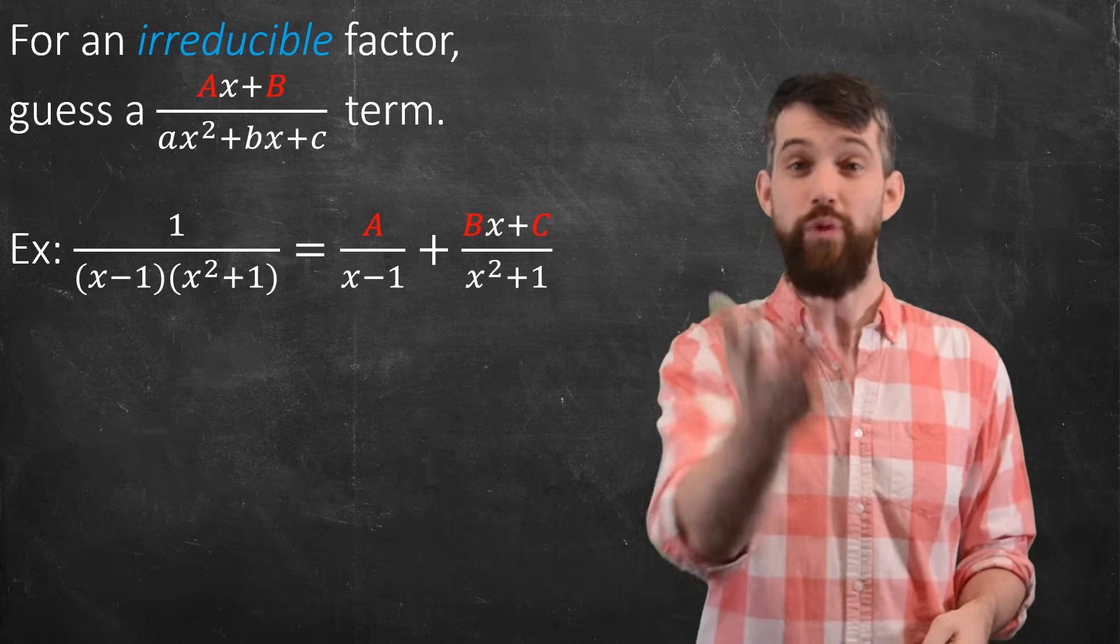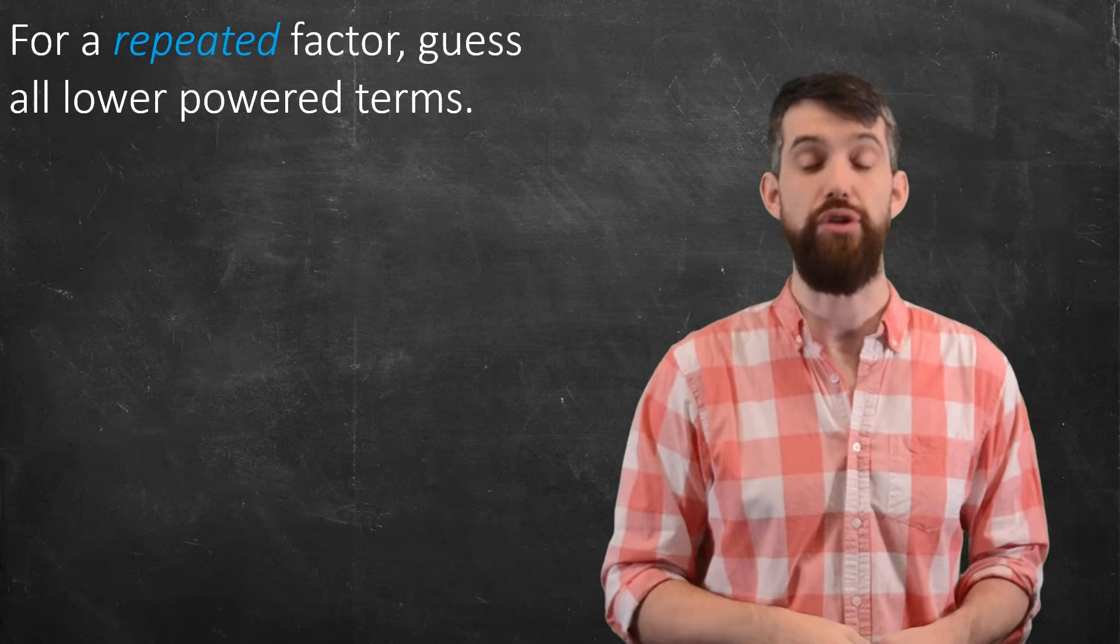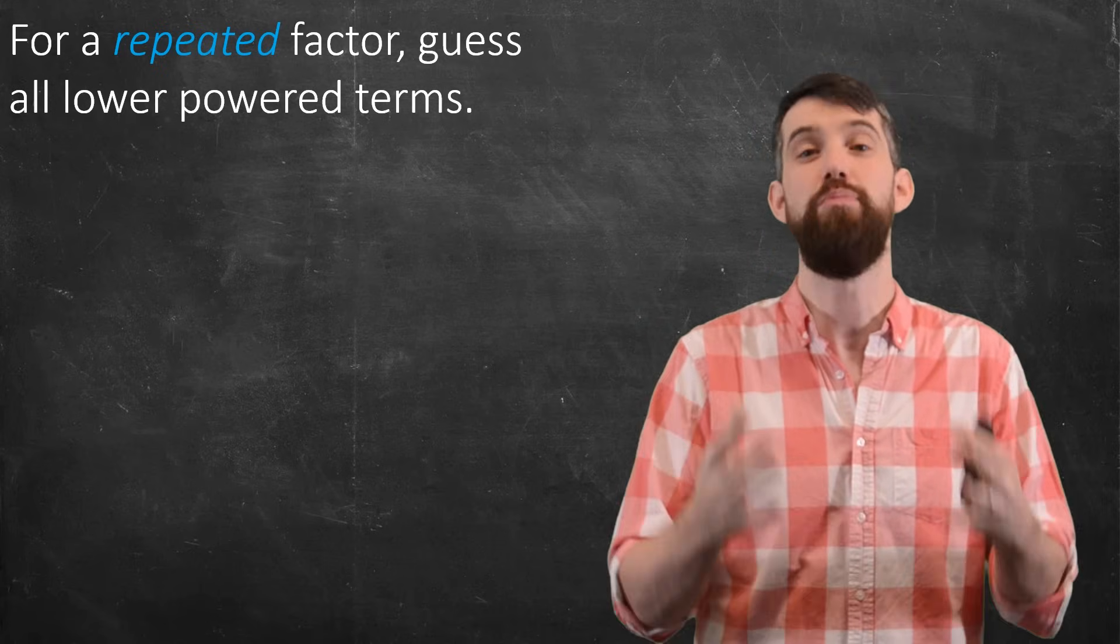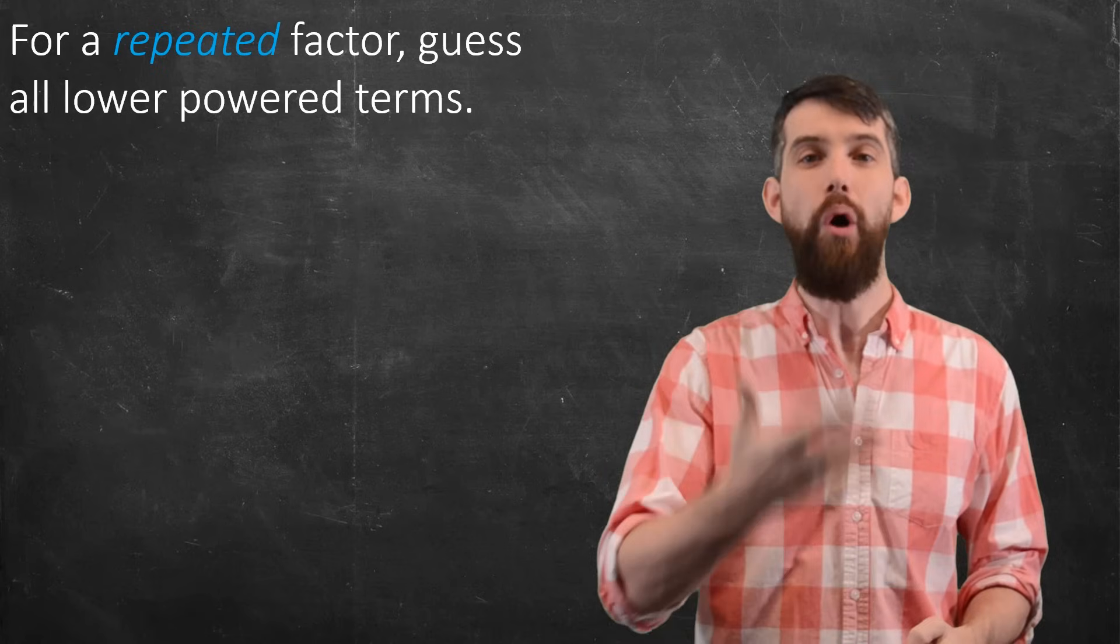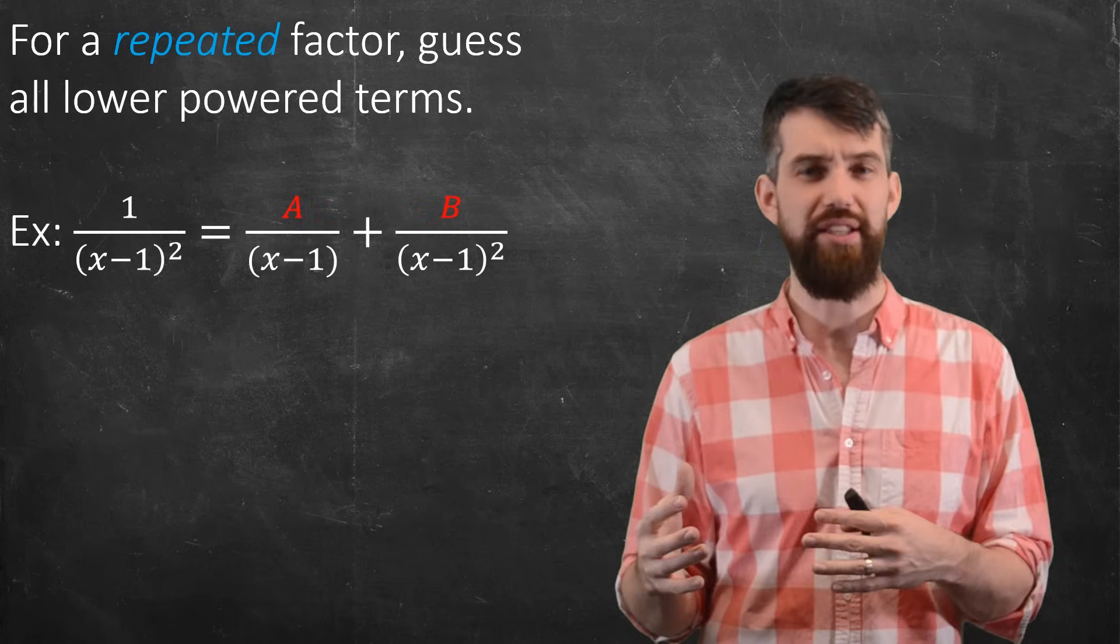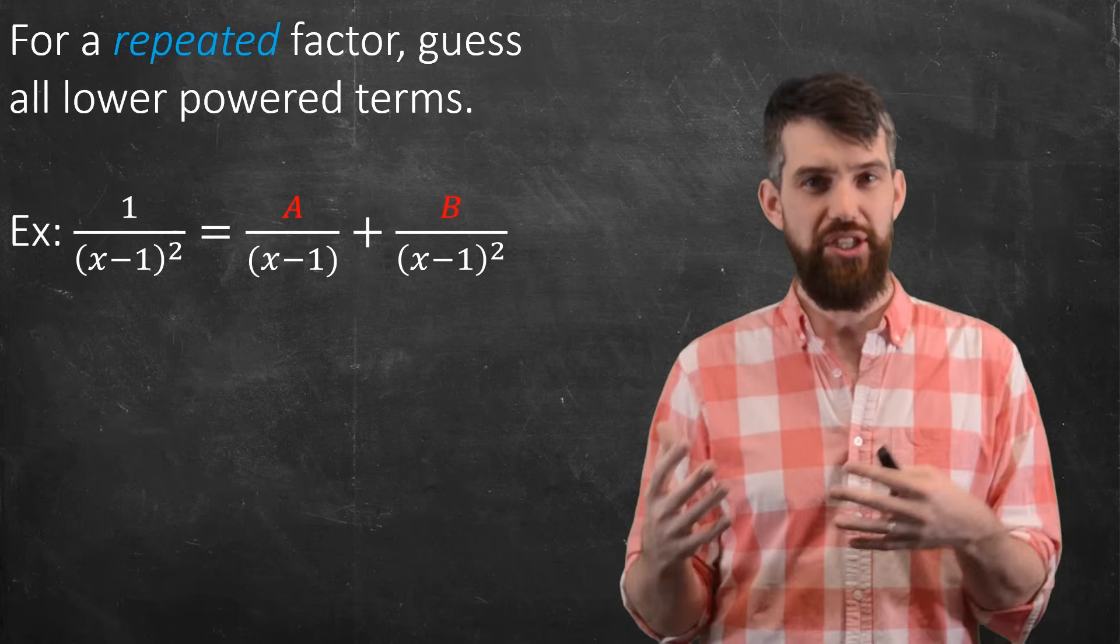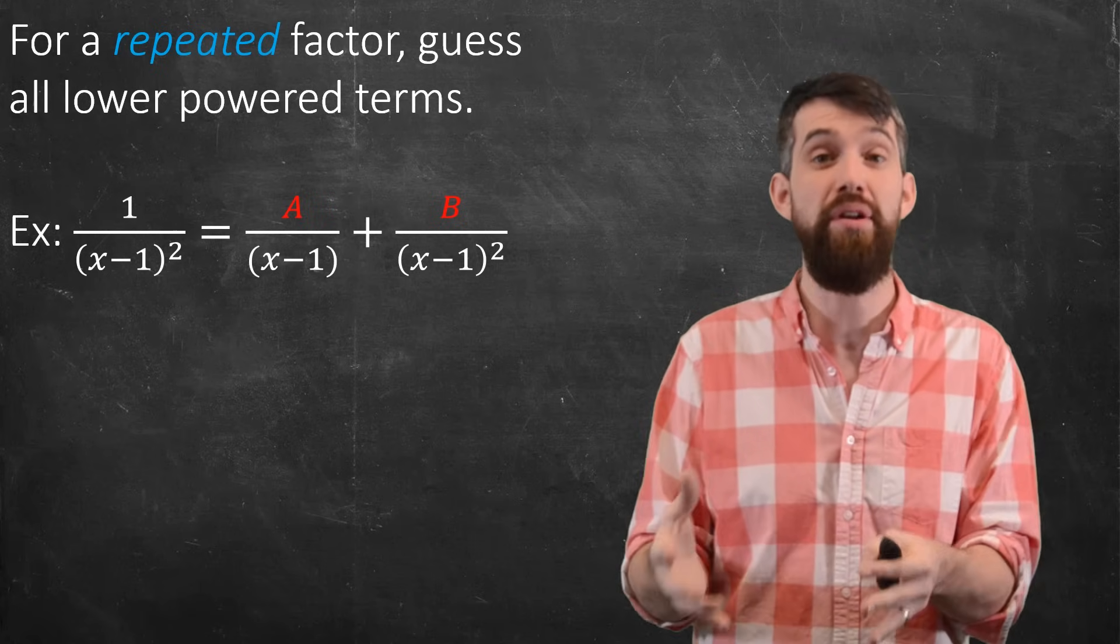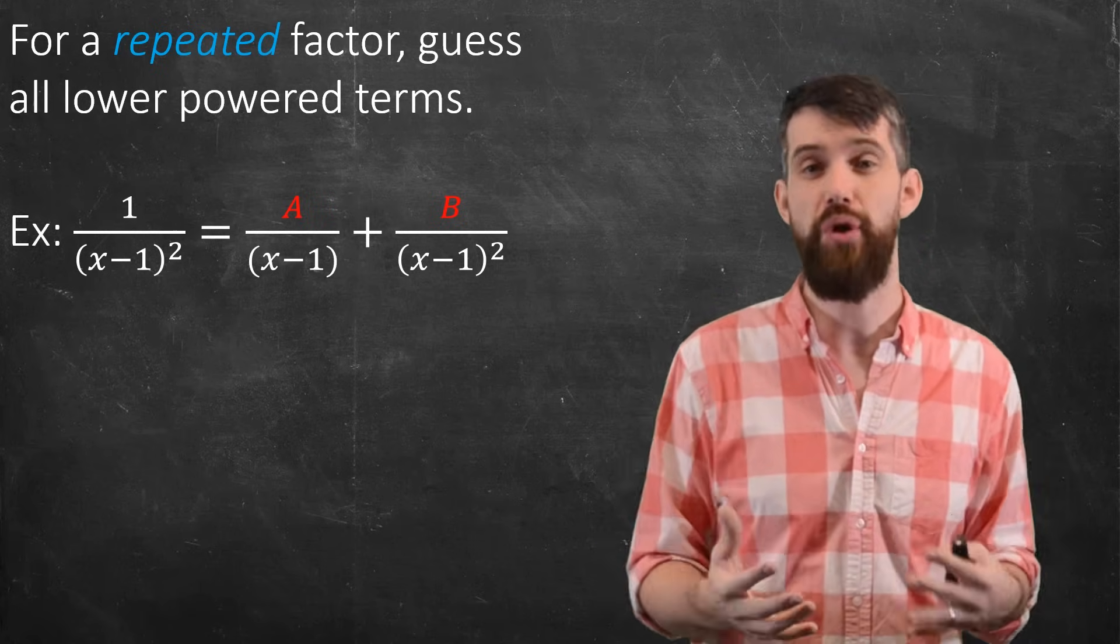But what happens if things repeat? In that case, there's another little bit of a trick. If I have a repeated factor, that is the same linear factor multiple times over, then what I have to do is guess all powers of it. What I mean is if I have something like a over x minus 1 squared, I want to guess a term that's got x minus 1 in the denominator and a term that's got x minus 1 squared in the denominator. For both of those, I put a constant a and b up on the top.